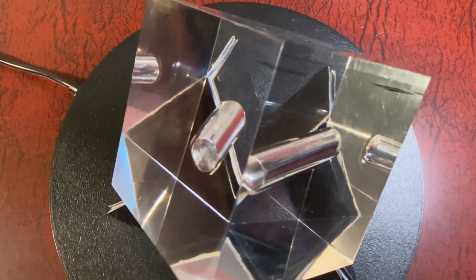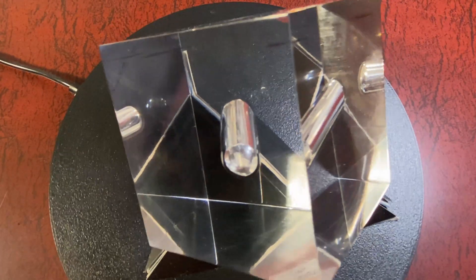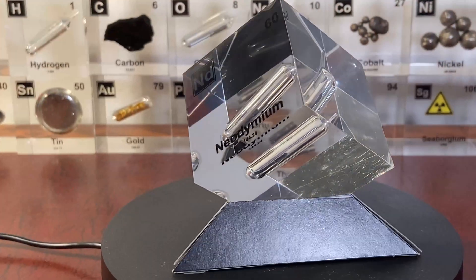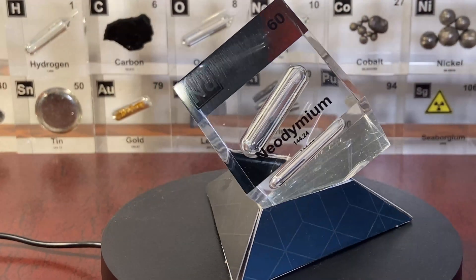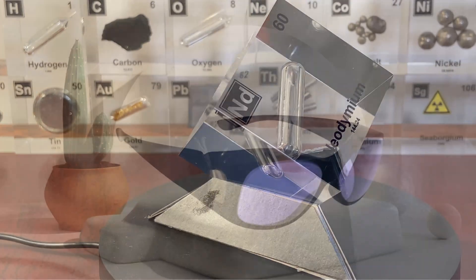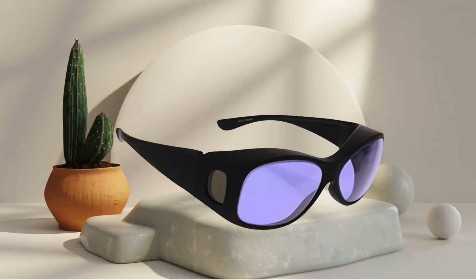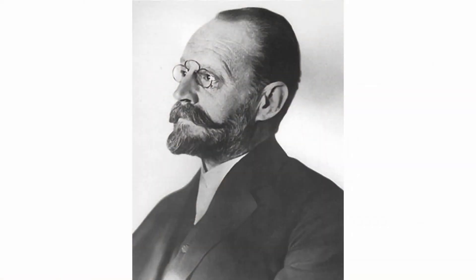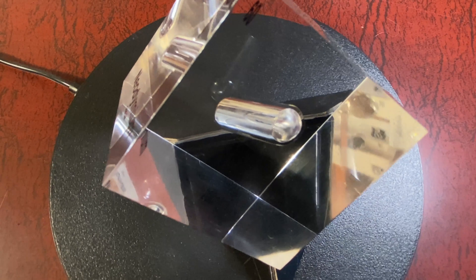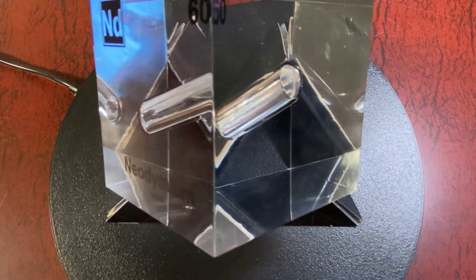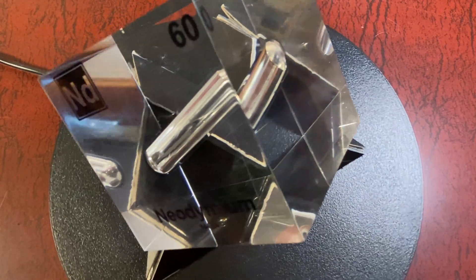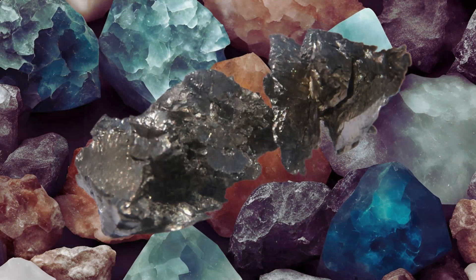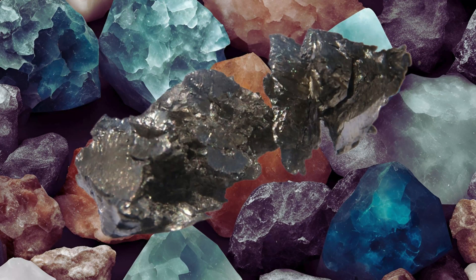However, Mosander couldn't fully isolate the components of didymium, leading him to believe that it was a single element. For several years, this element was thought to be one of the rare earth metals, used primarily in glass manufacturing to produce a distinctive color. In 1885, Carl Auer von Welsbach managed to do the near impossible. It involved a meticulous and groundbreaking process of separating what was previously thought to be one element, didymium. He managed to separate it into two elements, neodymium and praseodymium.